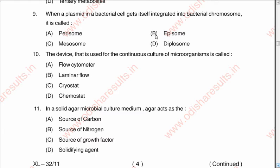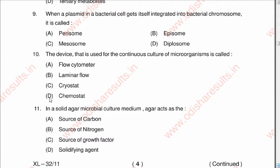Question number nine: When a plasmid in a bacterial cell gets itself integrated into the bacterial chromosome, it is called A: parasome, B: episome, C: mesosome, D: repression. The correct answer is B: episome. Question number ten: The device used for continuous culture of microorganisms is called A: flow cytometer, B: laminar flow, C: cryostat, D: chemostat. The correct answer is D: chemostat.